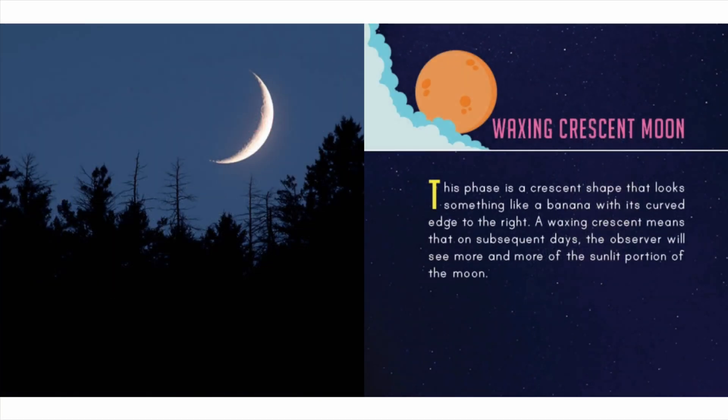Waxing crescent moon: this phase is a crescent shape that looks something like a banana, with its curved edge to the right. A waxing crescent means that on subsequent days the observer will see more and more of the sunlit portion of the moon.